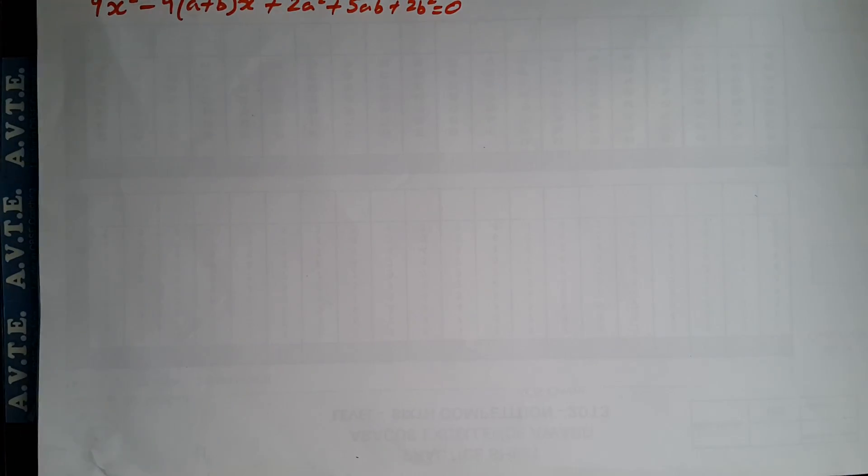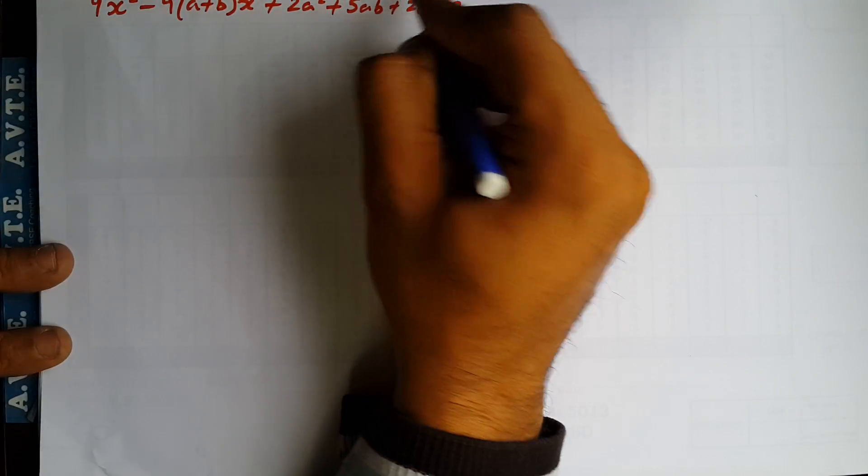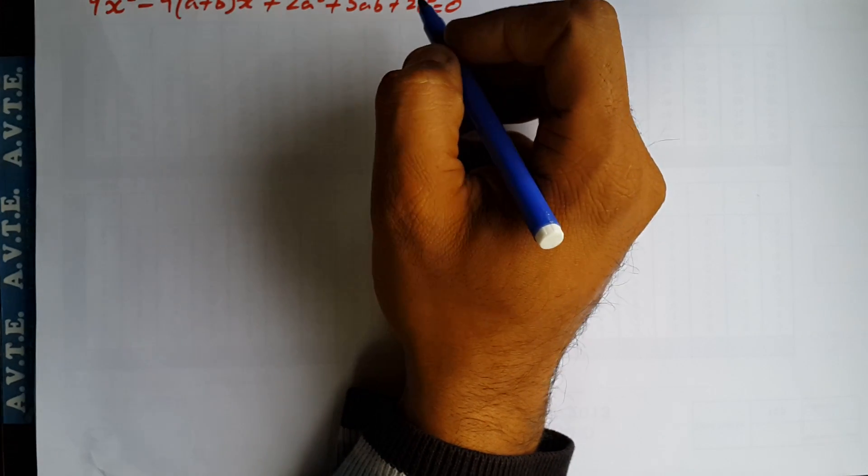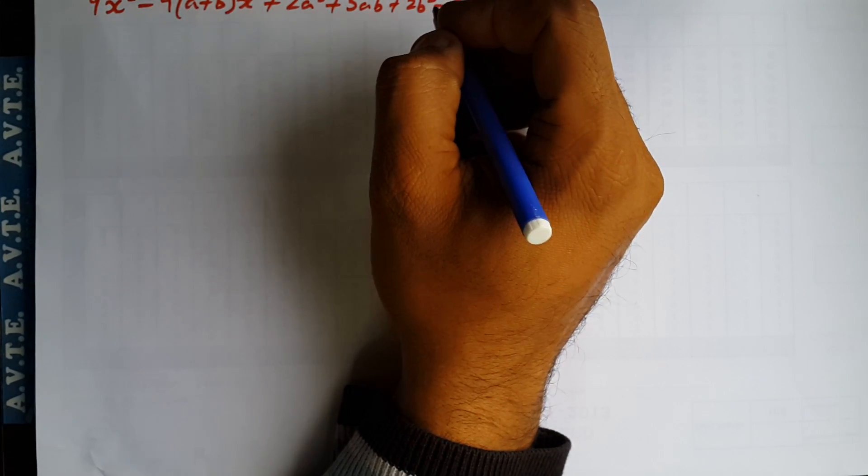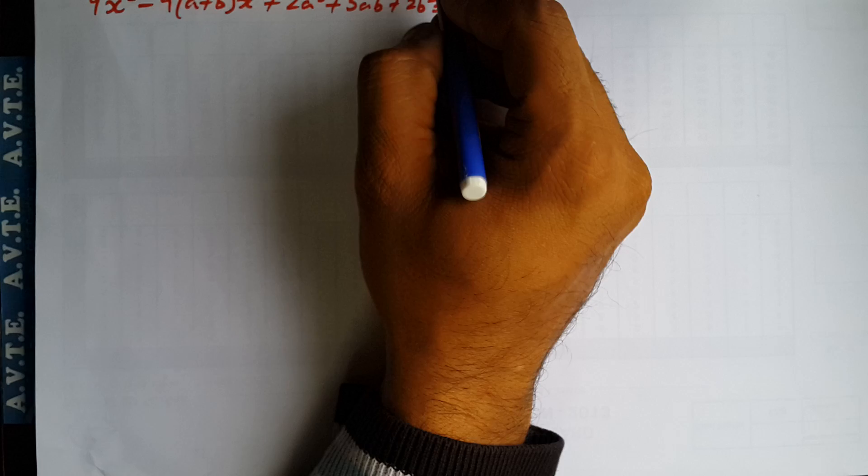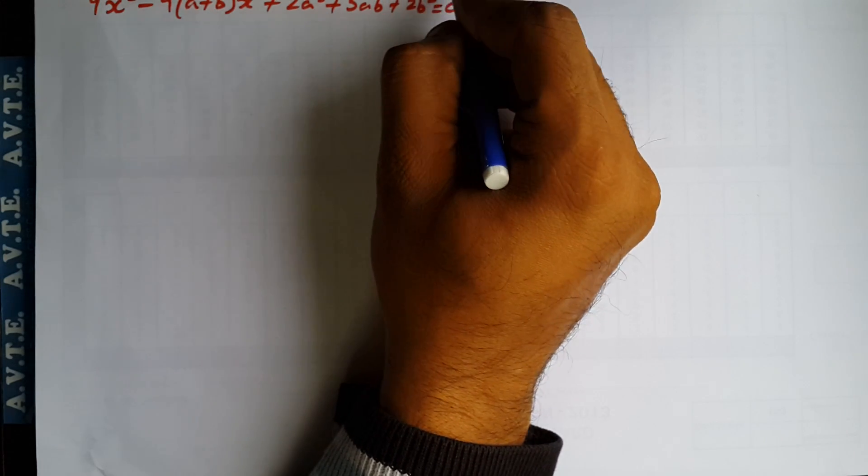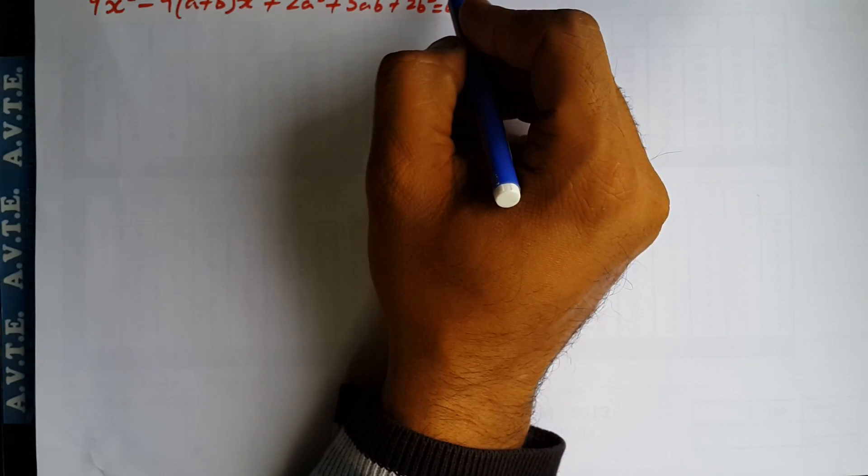If you do this question by D method, that is preferably easy. But if the examiner is asking you to do this question by factorization, then you have to apply either middle term or you have to factorize by common method. So we start with the factorization.